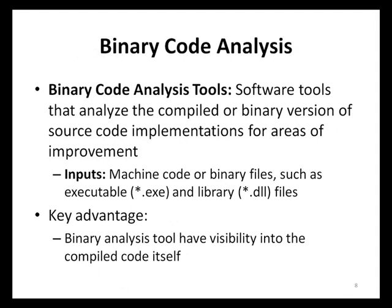Binary code analysis tools, similar to static source code analysis tools, analyze the implementation of an application. However, instead of analyzing the uncompiled source code, they examine the compiled or binary version of the application — sometimes referred to as machine code. Binary analysis tools have a distinct advantage in that their inputs are actual applications. Source code read by static source code analysis tools may be modified or rearranged by optimizing compilers. This final and actual state of the application will often not be visible to static source code analysis tools, but will be visible to binary analysis tools, meaning reported findings tend to be more accurate.